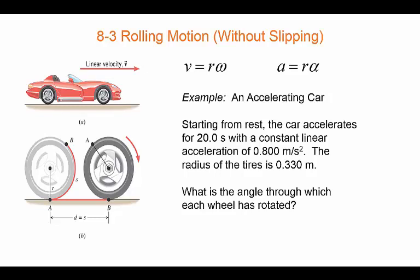So starting from rest, your car accelerates for 20 seconds with a constant linear acceleration of 0.8 meters per second squared. That's a linear acceleration. The radius of the tires is 0.33 meters. What is the angle through which each wheel has rotated?